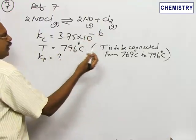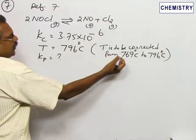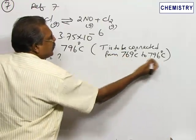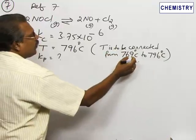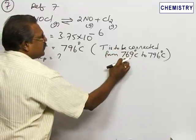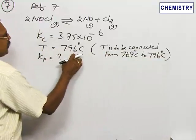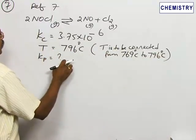The temperature in the book supplied by us is written as 769. You should correct the temperature to 796 – it is a transposition error. Therefore, correct the temperature from 769°C to 796°C, and the KP value is to be calculated.